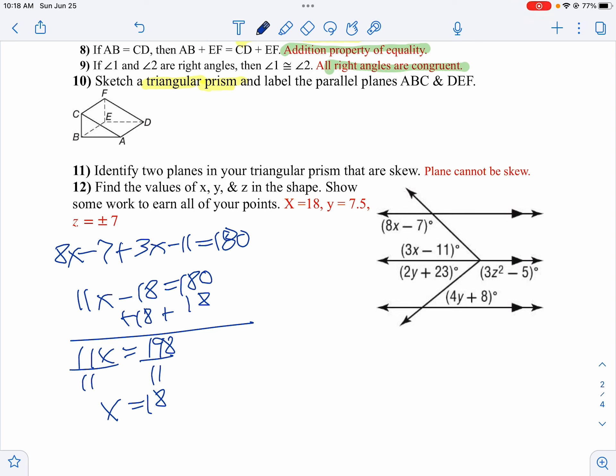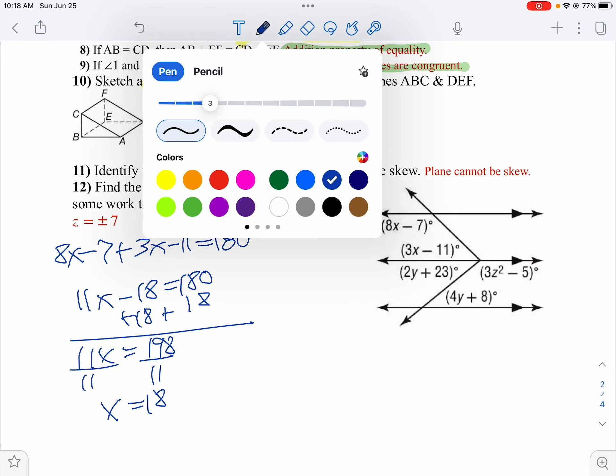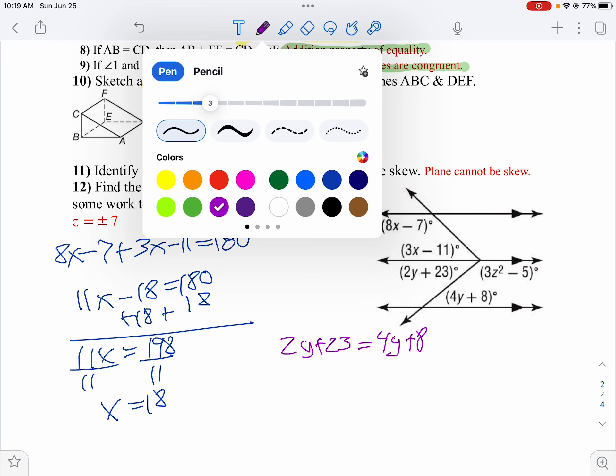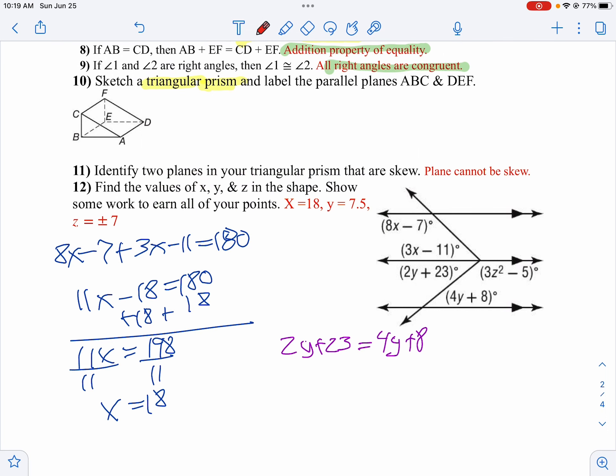Now for y, they have alternate interior angles. So by knowing y, they're going to be equal. So I'm going to say 2y plus 23 equals 4y plus 8. Now let's solve for y. So let's subtract 2y from both sides. At the same time, we'll subtract 8 from both sides.